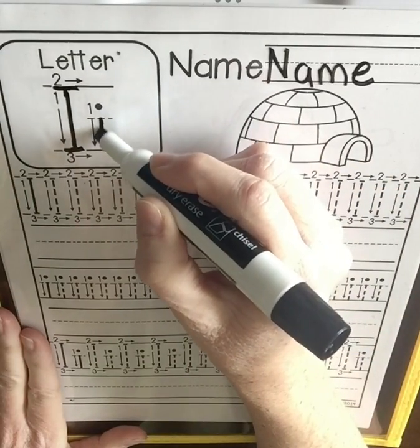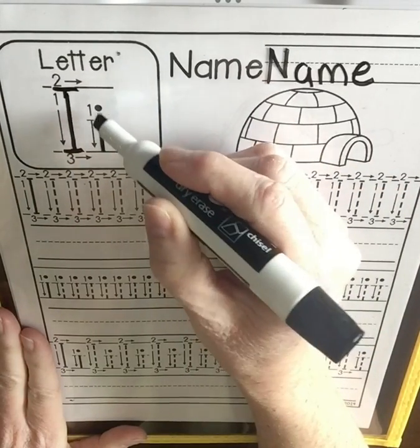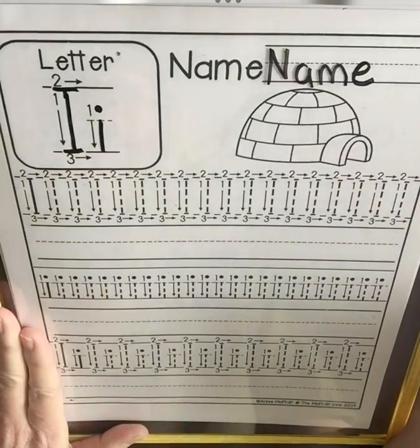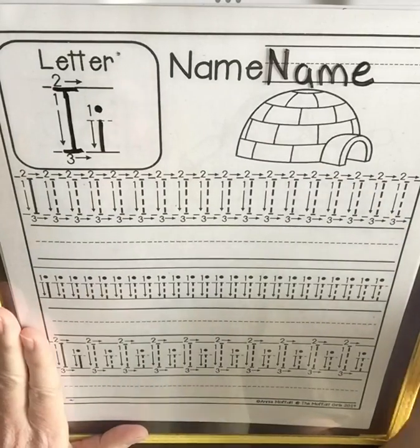Lowercase i — a little line, jump back to the top, and dot it on top.